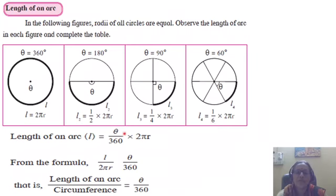The length of an arc is given by theta by 360 into 2πr. So L upon 2πr — this ratio is the same as theta upon 360. L is the length of an arc, and 2πr is the circumference of the circle. So: length of an arc upon circumference — this ratio is the same as theta upon 360.